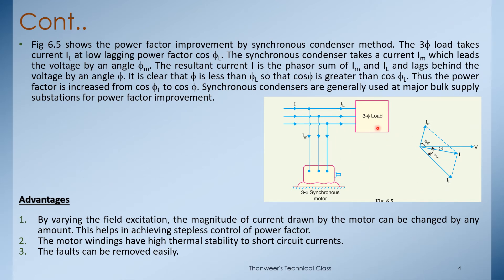This figure shows the synchronous condenser method. The synchronous current leads the voltage by an angle phi. The vector sum gives the resultant current, and the final phase angle is reduced. The power factor is thus improved. By varying the field excitation, it varies the magnitude of the current, providing stepless control of the power factor.